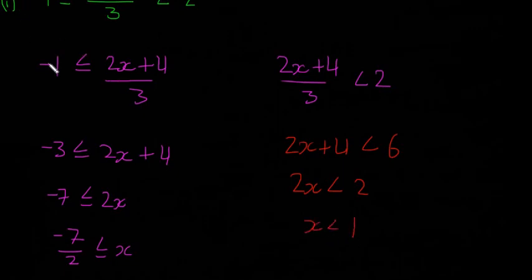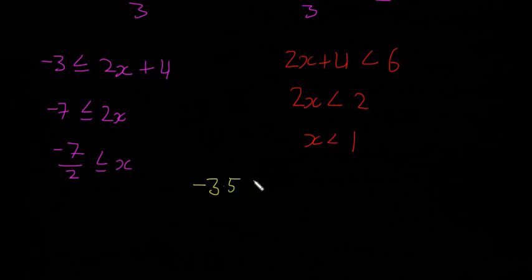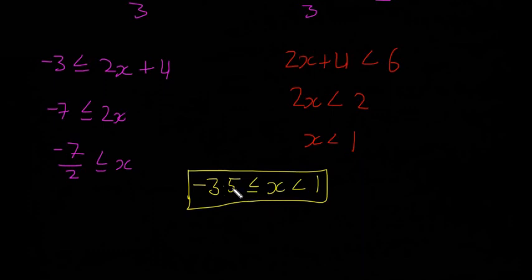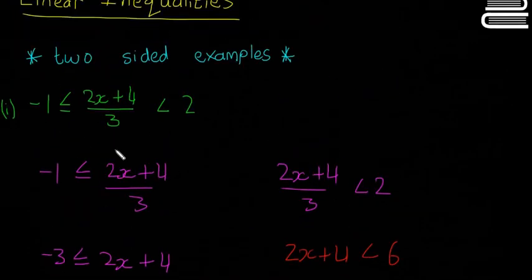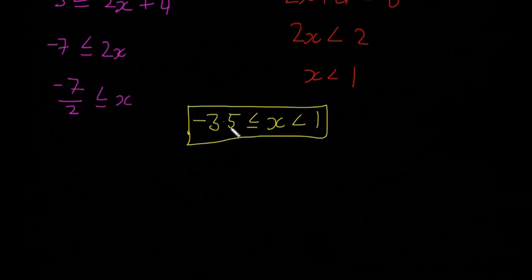So our answer is you have to combine the two different answers into one line. -7/2 is just -3.5, so I'm going to write -3.5 ≤ x < 1. That gives a kind of gap for x. X can be any number between -3.5 and 1, and that's what that line means. That's how you solve these two-sided examples of linear inequalities.